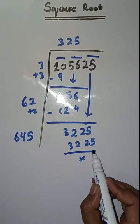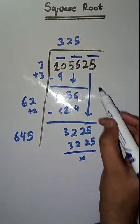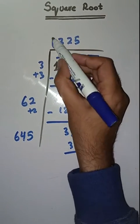So this is now completely solved. The square root of 105625 is 325.